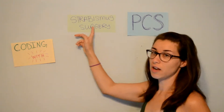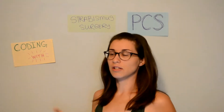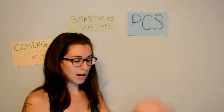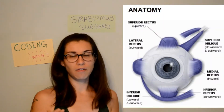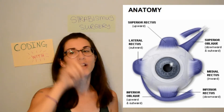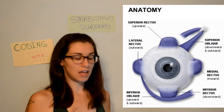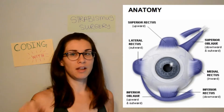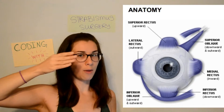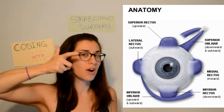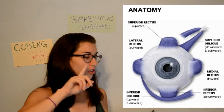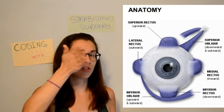Strabismus surgery is also called eye muscle surgery, so this has to do with the muscles of the eye. If we look at the anatomy of the eye, there are quite a few different muscles involved in the locomotion of the eyeball. This surgery specifically talks about the lateral and medial rectus muscles. The lateral is on the outside and contracts to turn the eyeball outward, while the medial rectus muscle contracts to turn the eyes inward.